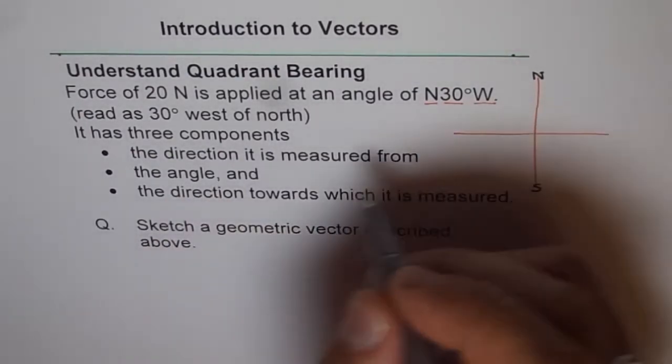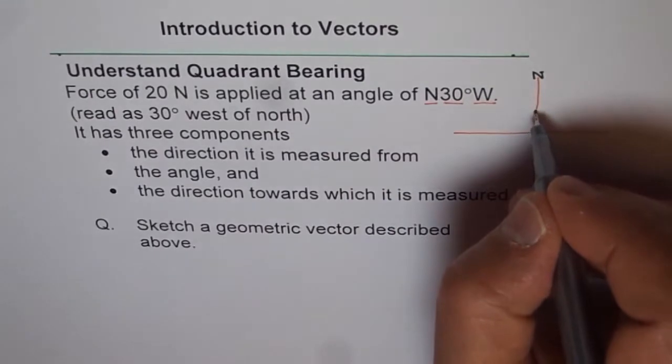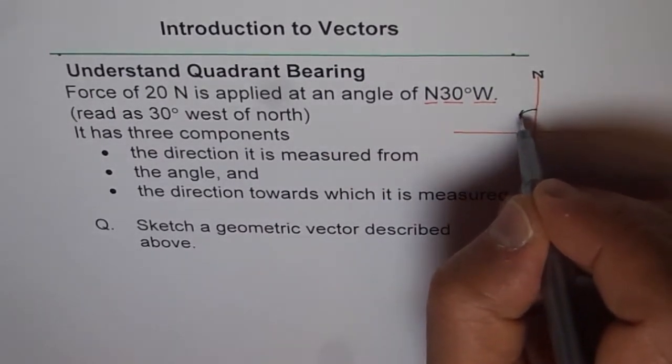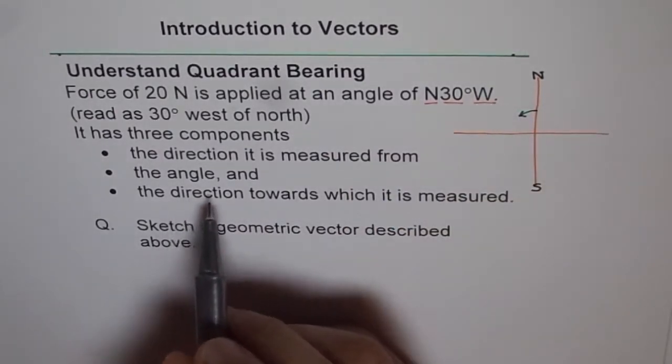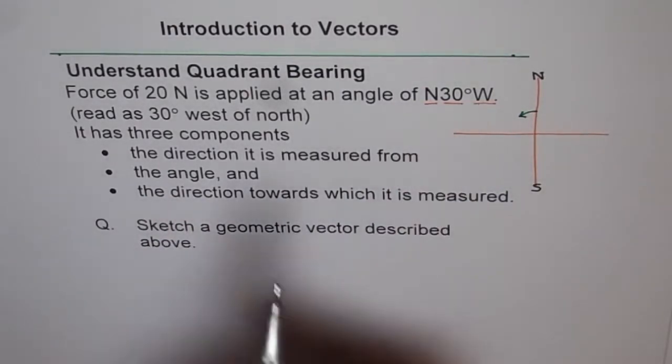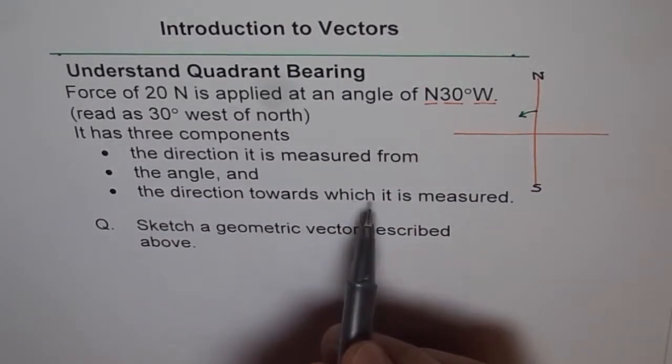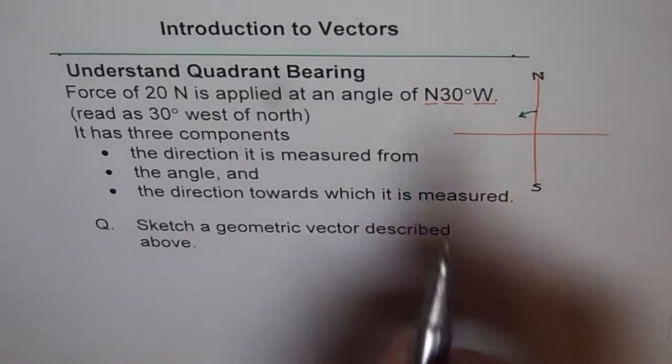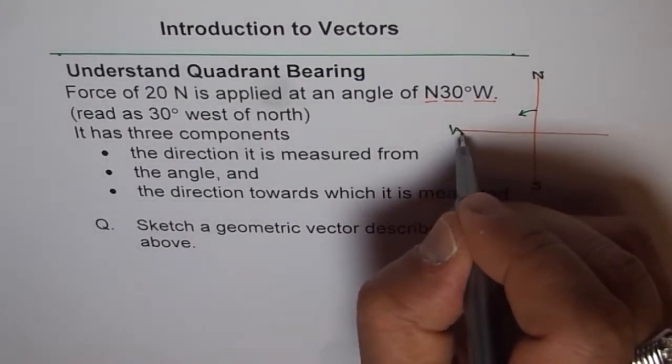The angle of rotation is 30 degrees. So we rotate from here, let's say, 30 degrees. It could be either way. The third part says, in which direction. So that direction towards which it is west. So it is towards west in our case.